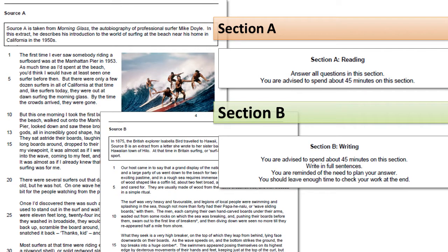As in paper 1, you've got two sections. Section A is your reading section. There's four questions on that section A and section B is your writing section, just the one question this time. Section A and section B, as in paper 1, you're advised to spend 45 minutes on.